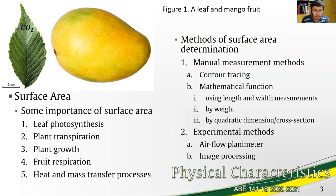Another important aspect of surface area is food respiration. The greater the surface area, the more respiration gases the food emits. Ethylene is one of the five major plant hormones and it is essential for food ripening. The greater the surface area, the more ethylene is produced.